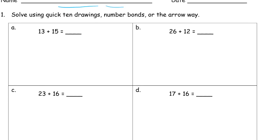Solve using quick 10 drawings, number bonds, or the arrow way. This is a lot like the recent homework assignments. I'm just going to go through this and I'm going to do different ways for different ones, depending on the strategy that makes the most sense to me. Other strategies might make more sense to you.